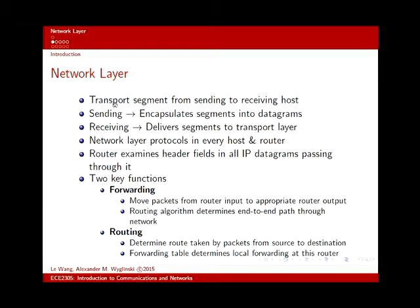Specifically, we have transport segments, and they are sending and receiving to a host. And so what happens is, when we send them, we encapsulate them into datagrams, the IP datagrams. And then when we're receiving, we deliver those segments to the transport layer above us. And so what happens is, in particular, the network layer, with all these IP datagrams, it has two basic functions, routing and forwarding. So forwarding, what it does is, if we go back to this.